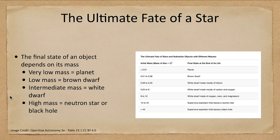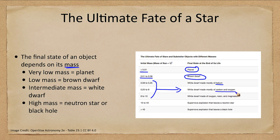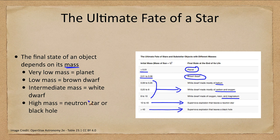So what is the ultimate fate of a star? It really depends on the mass. Objects less than 1/100 the mass of the Sun are planets. Between 1/100 and 8/100 solar masses we have brown dwarfs — not quite enough to fuse. Stars between 0.08 and 8 solar masses will all become white dwarf stars, ranging from helium white dwarfs at the low end, to carbon-oxygen white dwarfs like our Sun will become, to those that add neon and magnesium. For higher mass stars between 10 and 40 solar masses, that's where we get a supernova, leaving a neutron star or a black hole behind.